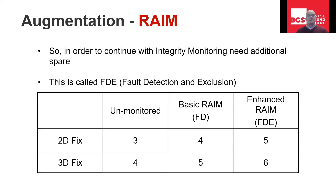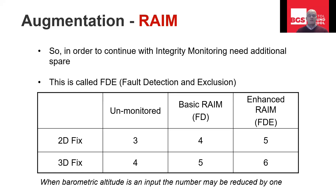We need what is referred to as RAIM with FDE — fault detection and exclusion. FDE requires just another satellite. Looking at the table: for a 3D fix unmonitored it'll be four satellites; basic RAIM (FD) would be five; and enhanced RAIM (FDE) means we can exclude a faulty satellite and still have RAIM protection. And as I mentioned, if we have parametric altitude information, we can reduce the number of satellites required by one.